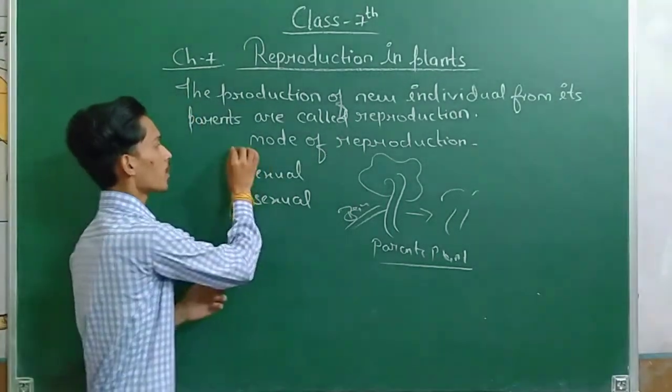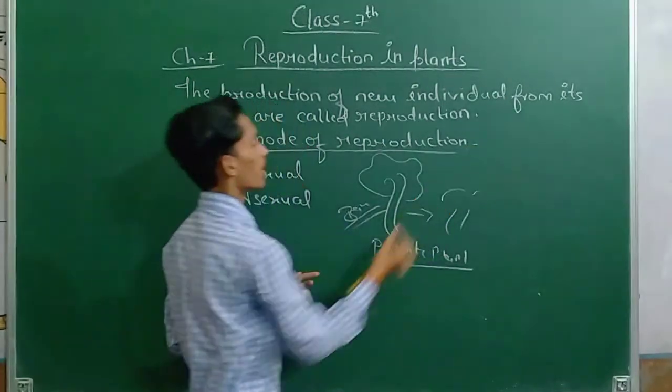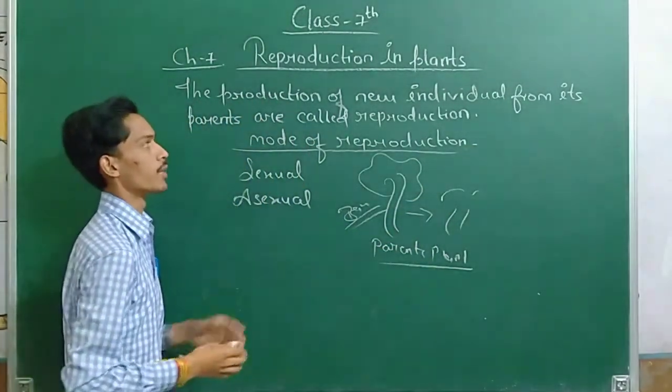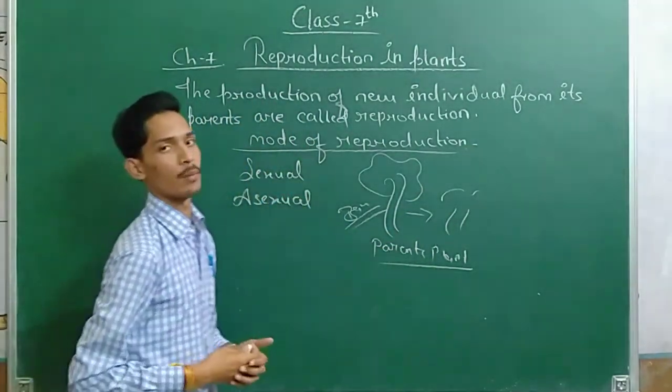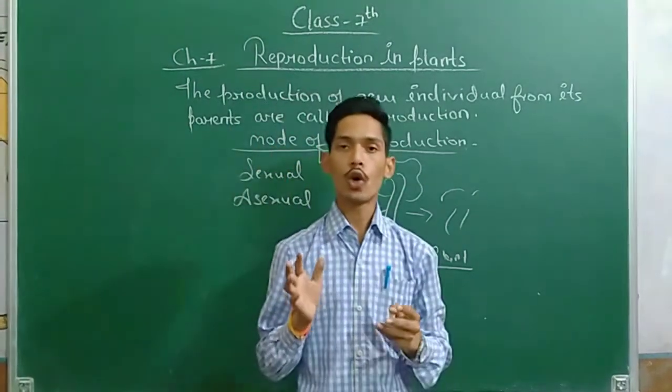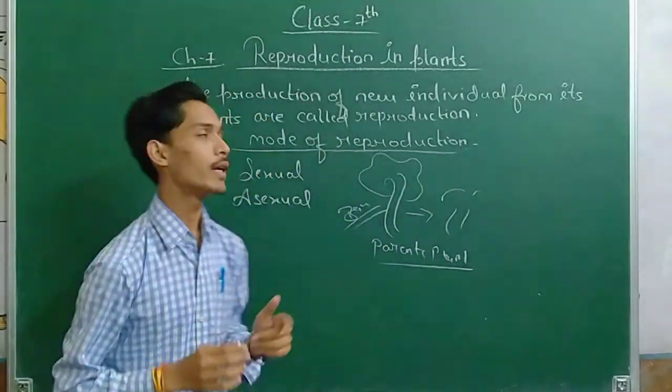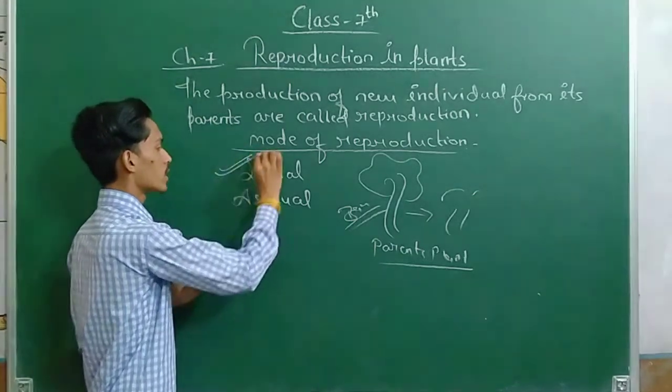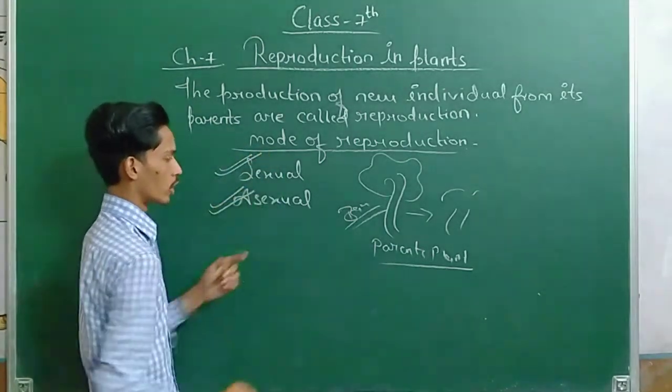Next topic is Mode of Reproduction in Plants. Mode of Reproduction means which types of reproduction. First is Sexual Reproduction, second is Asexual Reproduction.